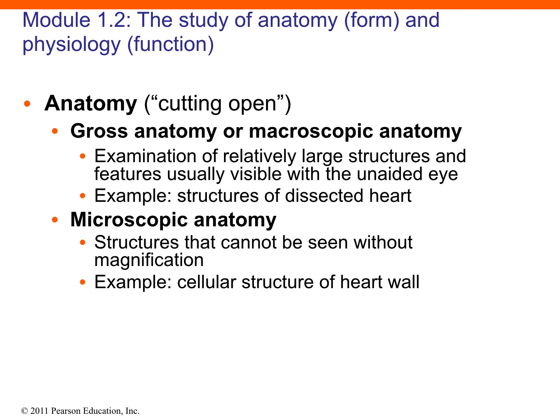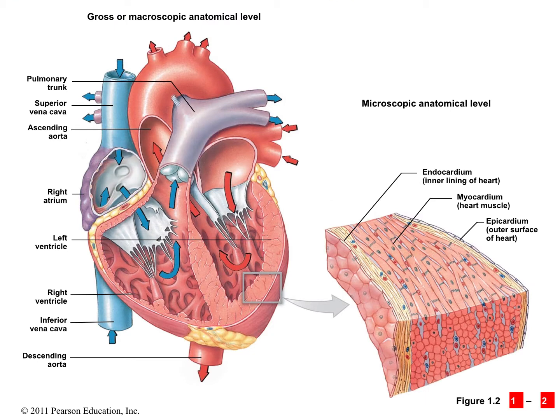Gross anatomy is the anatomy that we can see with the naked eye. For example, looking at the heart as a whole, studying the heart structures — that's all macroscopic anatomy. The heart has four chambers. We can see those four chambers, the valves of the heart, and the major blood vessels going to and from the heart, all with the naked eye.